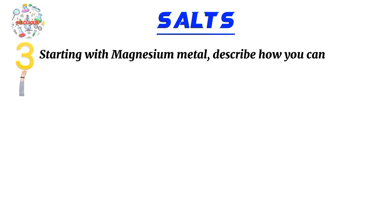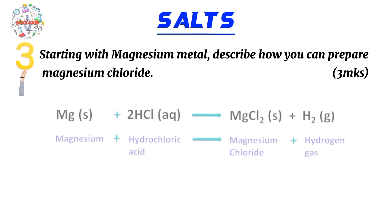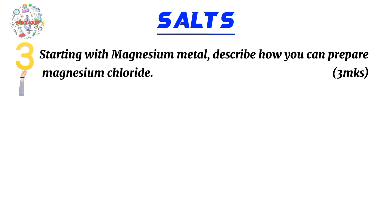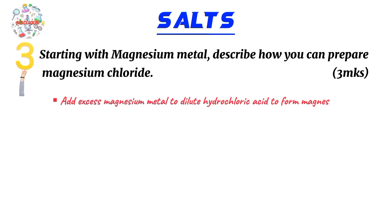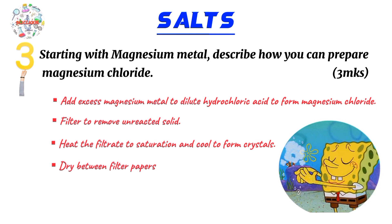Moving on to the next example: we are going to form magnesium chloride from magnesium metal. We've now used different starting materials — the first question used a metal oxide, the second a metal carbonate, and now we are using an actual metal. Following the same script: add excess magnesium metal to hydrochloric acid to form magnesium chloride, filter to remove any unreacted magnesium metal, heat the filtrate to saturation and cool to form crystals, and dry between filter papers.